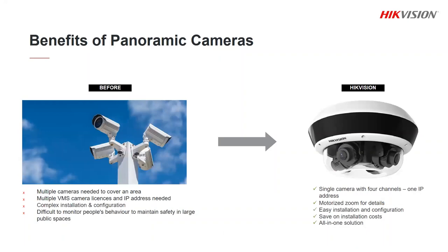We have different kinds of panoramic cameras and they're designed to solve different problems. Here's the traditional way to monitor a large area: you have multiple cameras pointing in different directions. They might all be installed on one pole but you need cabling for all of them, you need to power them all, and it's going to take time and money to install each of those separate cameras. Most VMS software has a cost per license and you'll need one license for every single camera that you have.